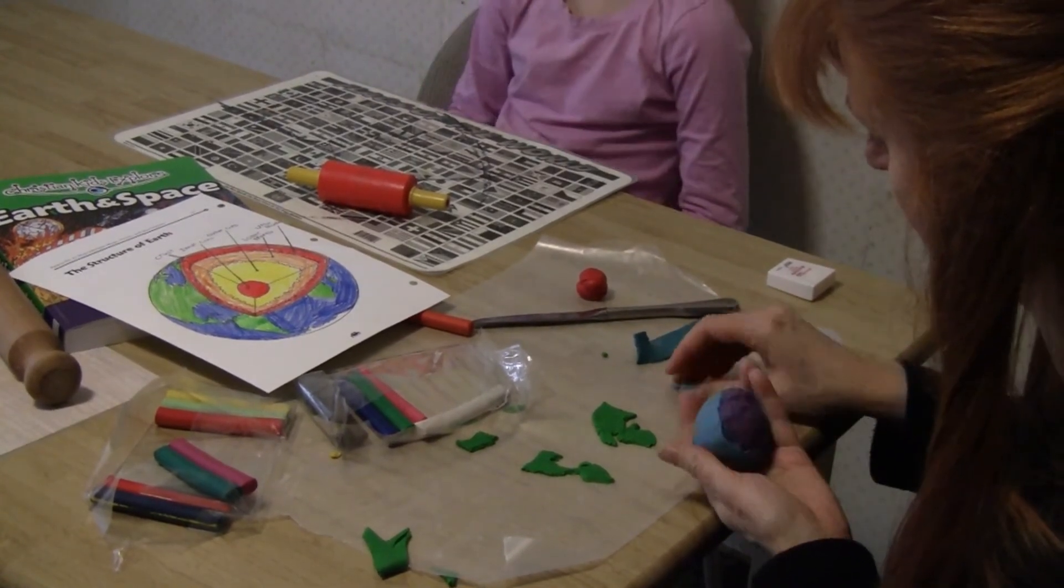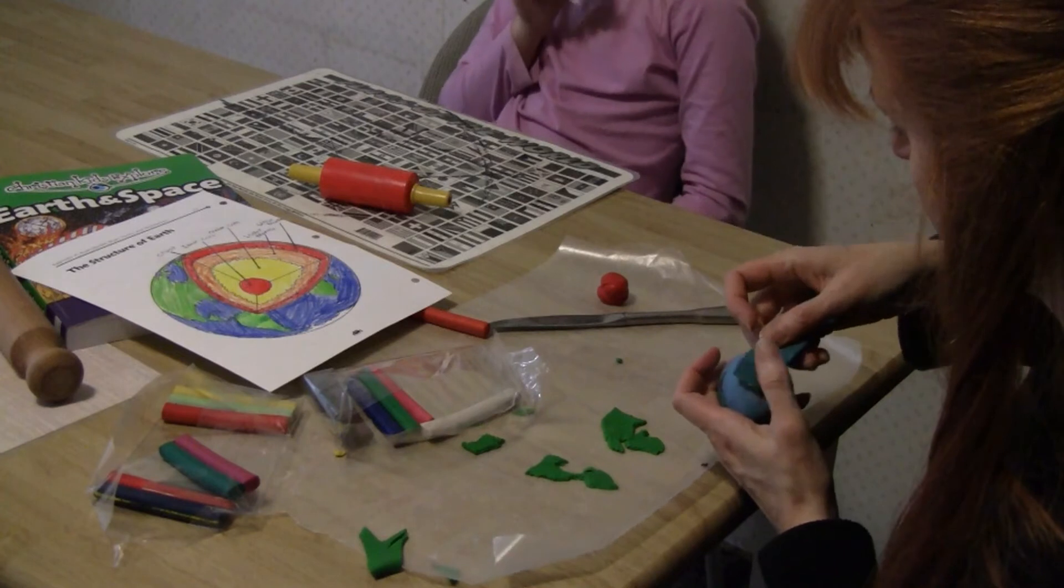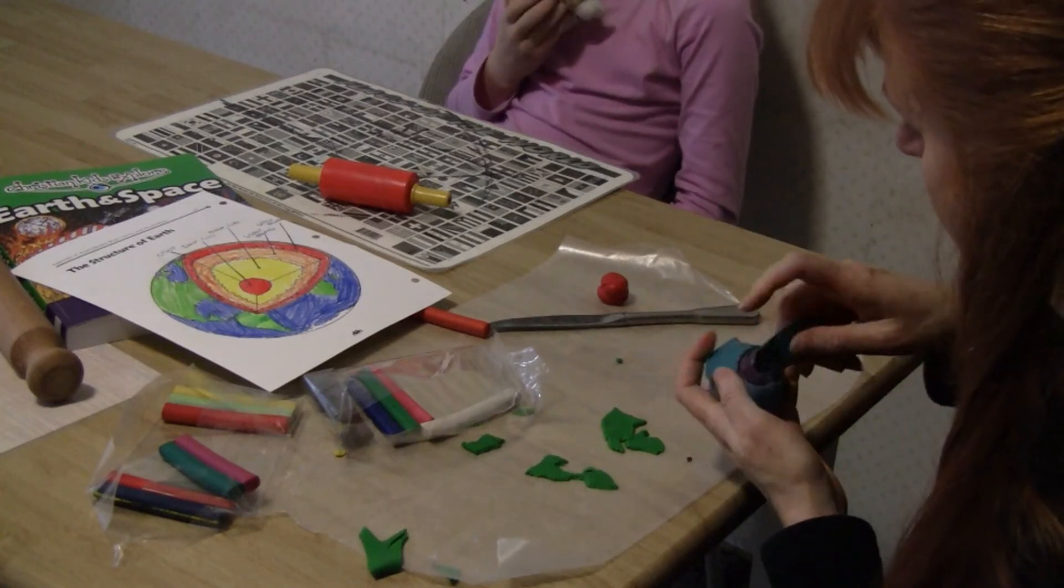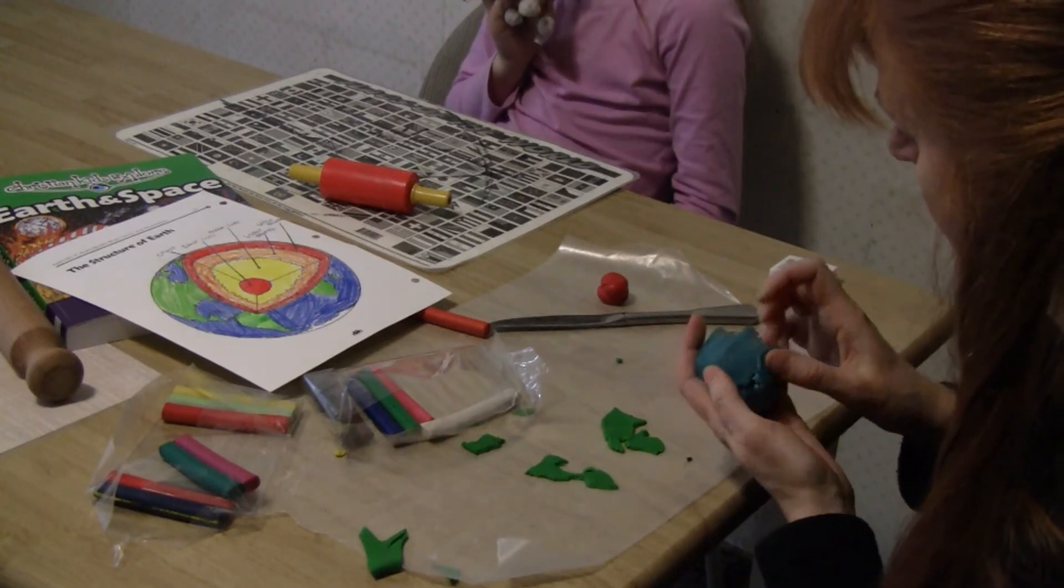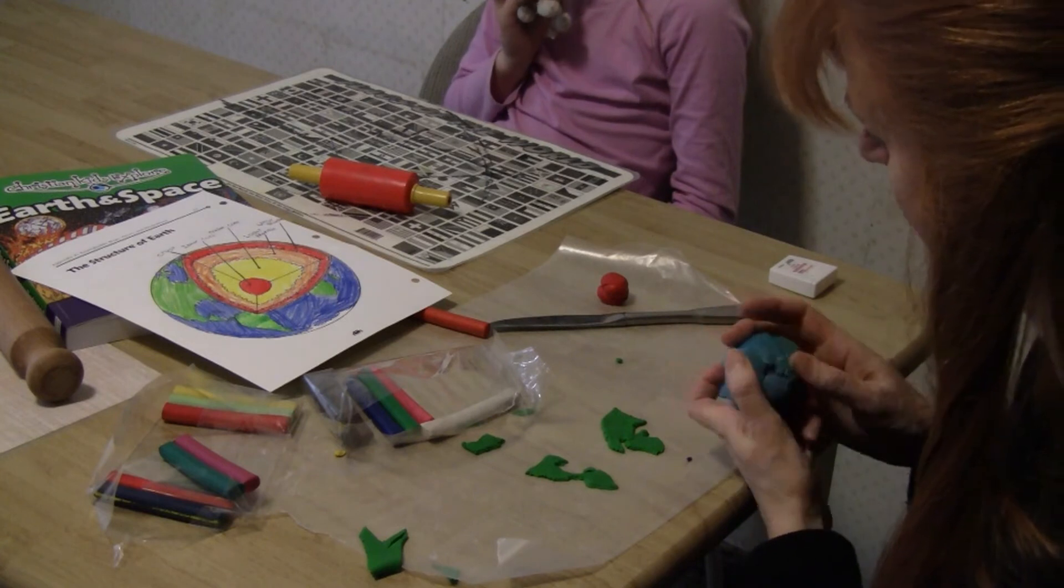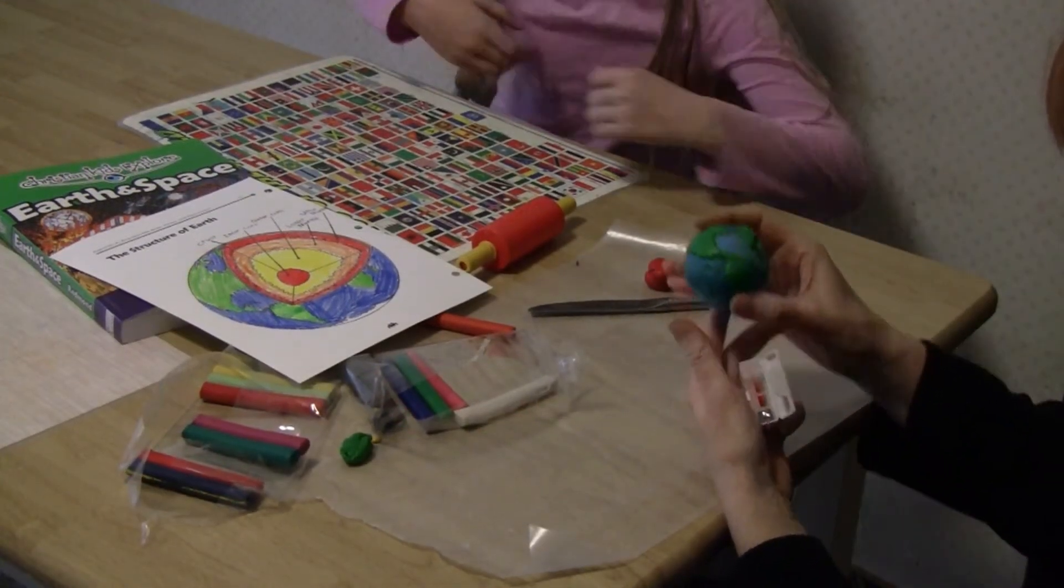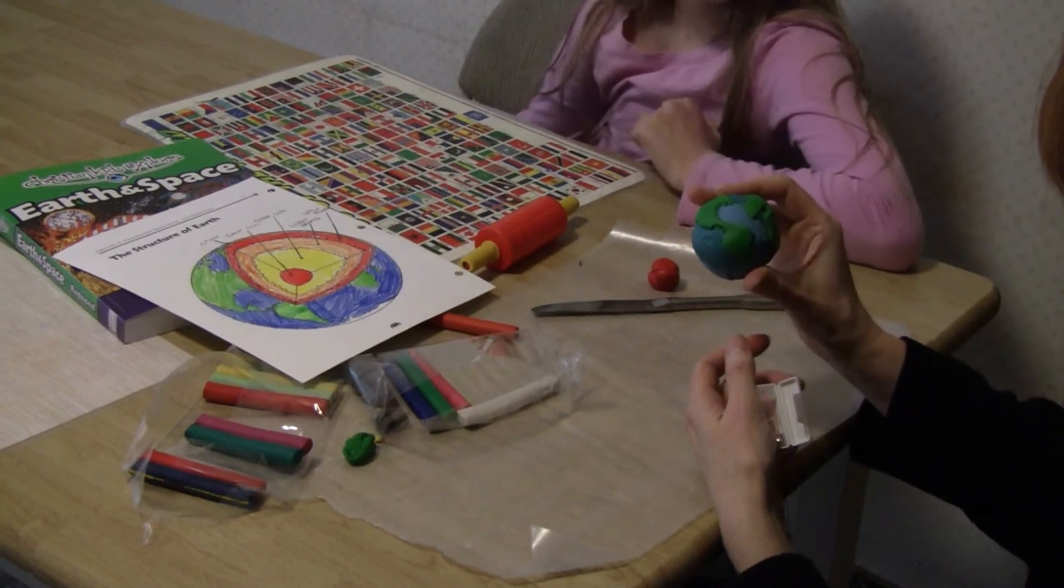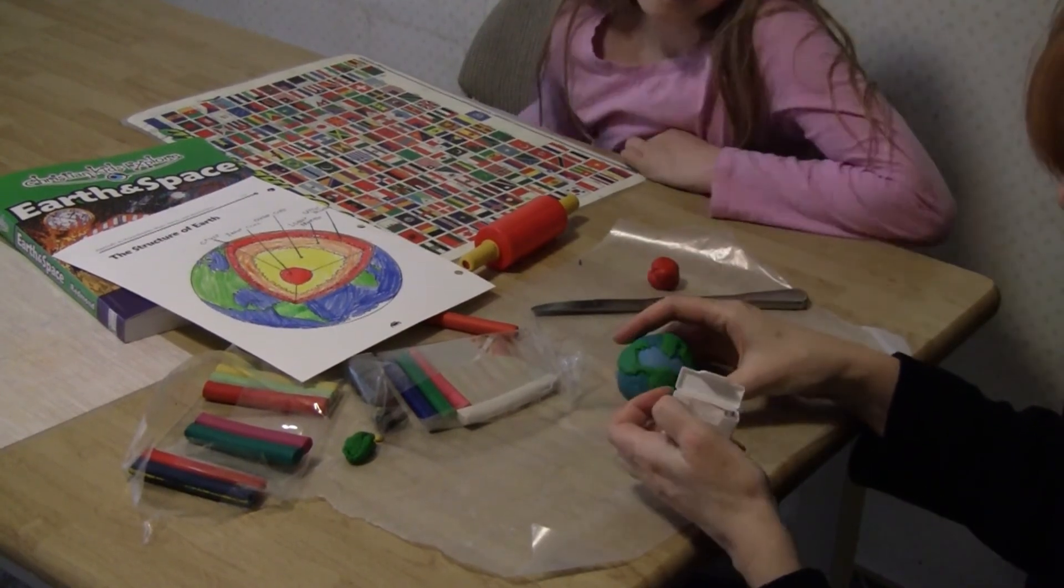So what we're going to do is we're going to finish covering this with all the water. And then what you do is you look at a map and then you carve out with green. You flatten the green and you carve out the continents as best you can. It doesn't matter. It doesn't have to be perfect, just a blob. And then you put the green on top of that water. So you just mash it down so you can see the earth.